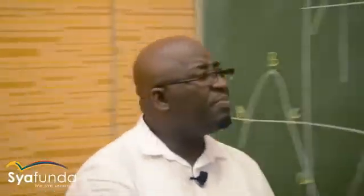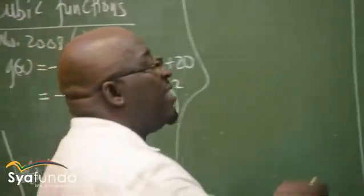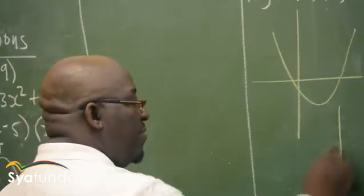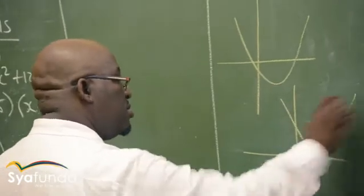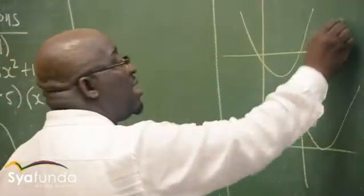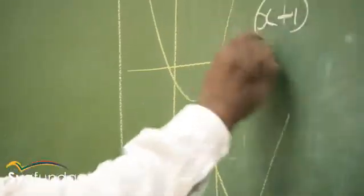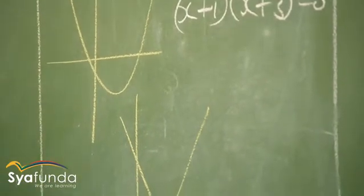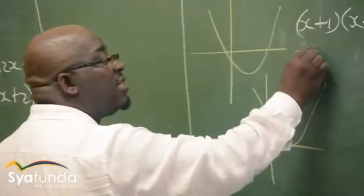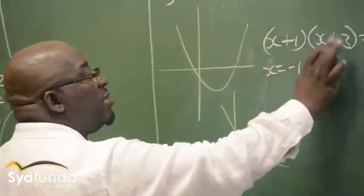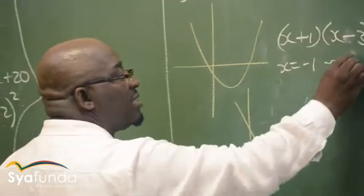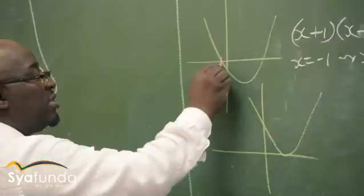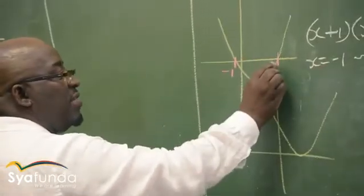Remember when you have a parabola like this one. If you are given a problem like x plus 1 into x plus 3 equals zero, solve for x. Solving this, you are going to have x equals negative 1, or x equals 3. So this position will be minus 1, and that side will be 3.